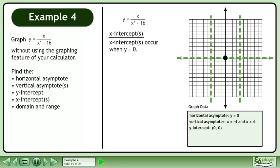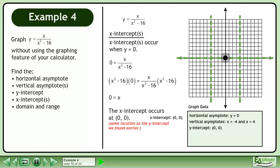Now we will find the x-intercepts. X-intercepts occur when y equals 0. Plug in 0 for y. Multiply both sides by x squared minus 16. This gives us 0 equals x. The x-intercept occurs at (0, 0). This is the same location as the y-intercept we found earlier.